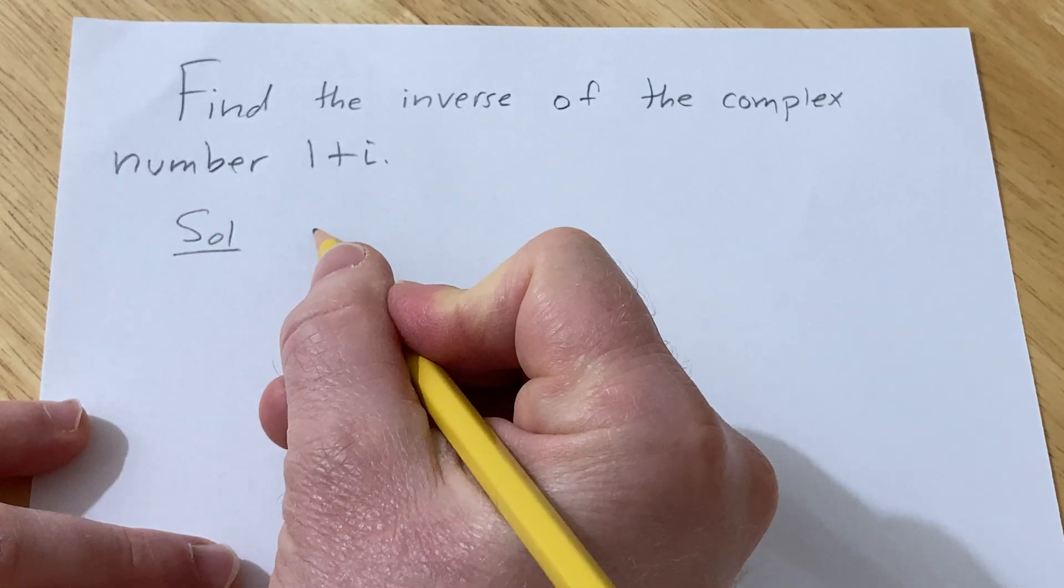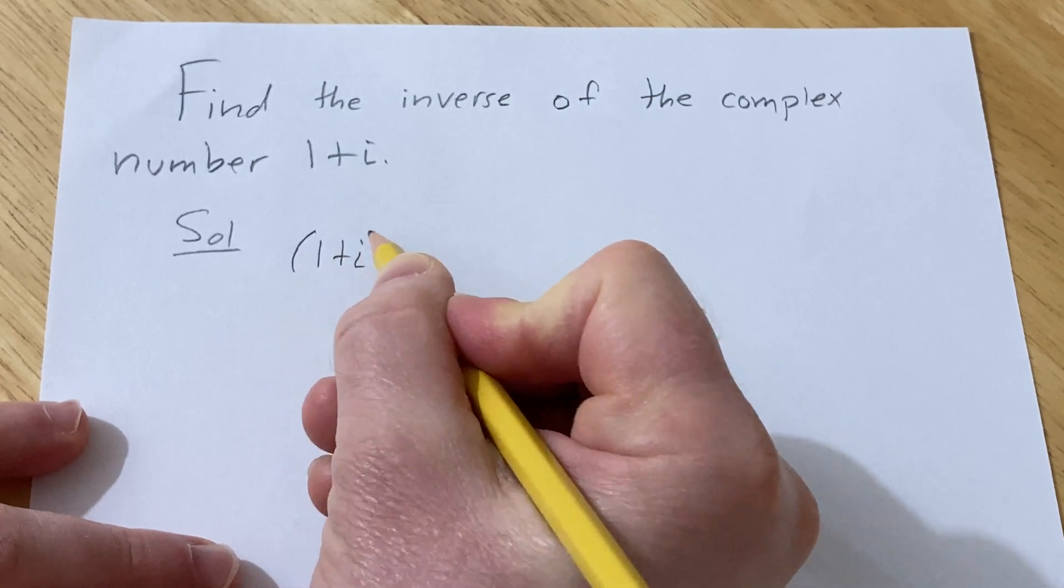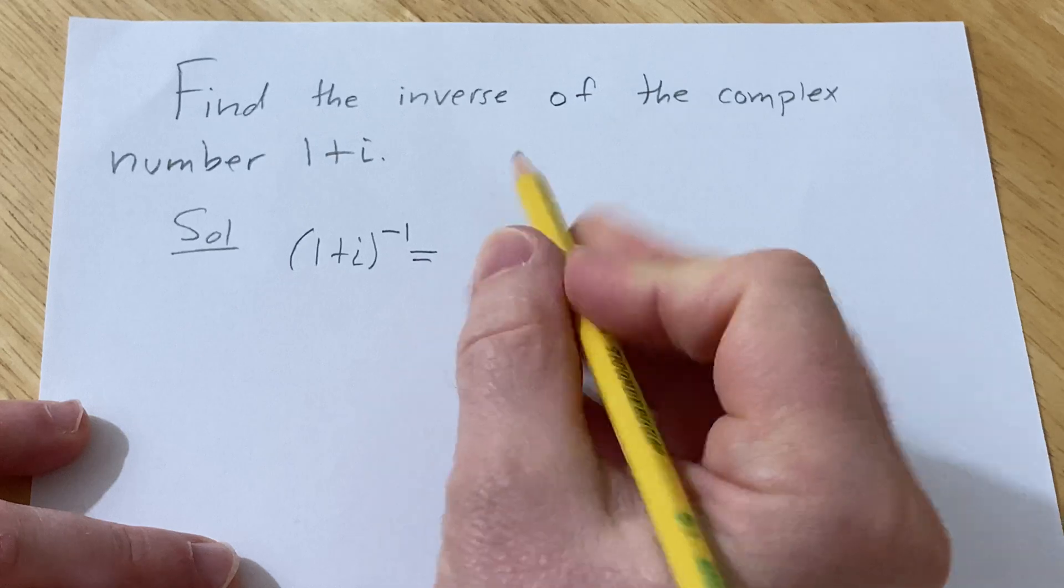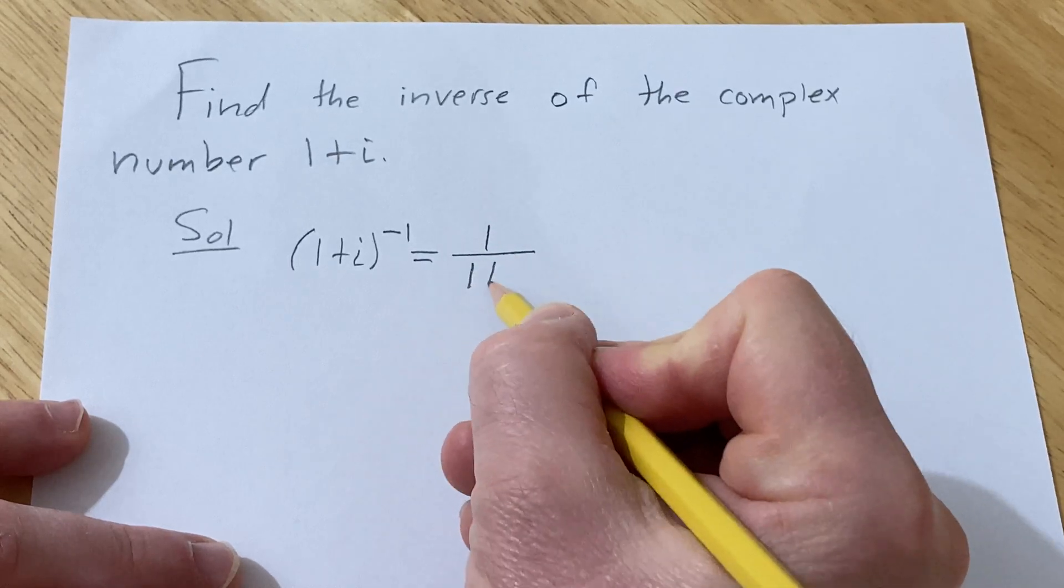So we can just do it all at once. We have 1 plus i, we want the inverse of this complex number. So this is 1 over 1 plus i.